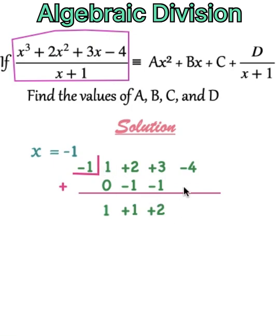Minus 1 times plus 2, we have minus 2. Minus 4 plus minus 2, minus 6, which is the remainder.